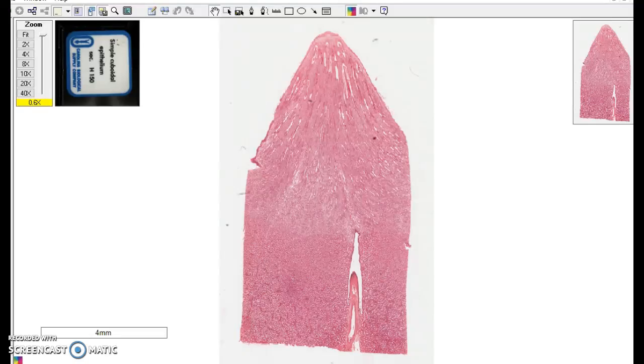Simple cuboidal epithelium. It has a very characteristic look. A great place to see it is in the kidney and this is a little section through a kidney.